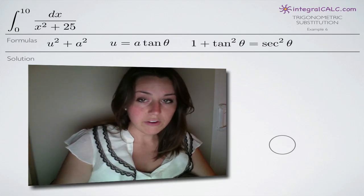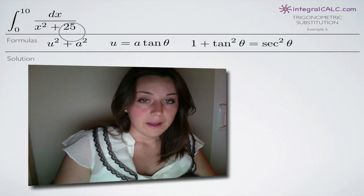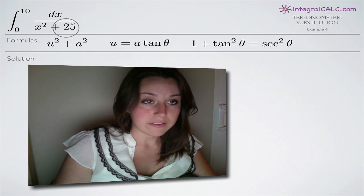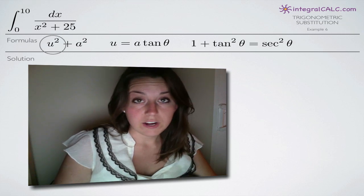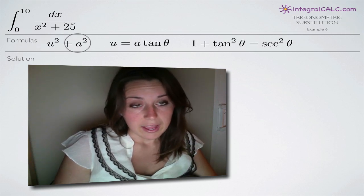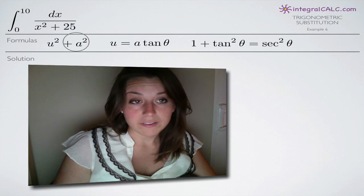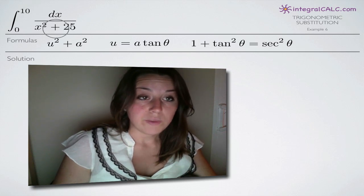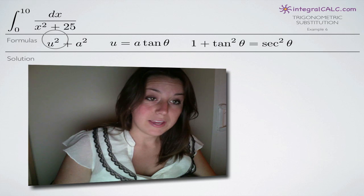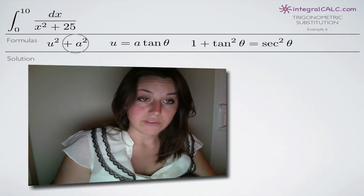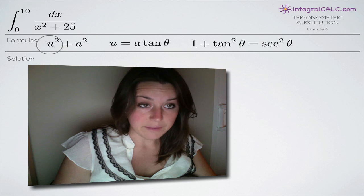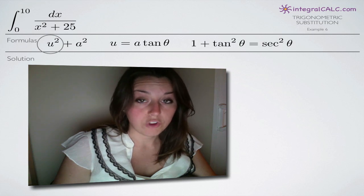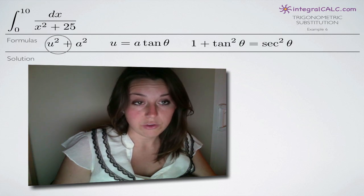Here's the formula we're going to need. For this particular problem, we need to recognize that we have the denominator in the form u squared plus a squared. U represents our variable — always x — and a represents a constant. Because we have addition here, we know we're making the substitution for u squared plus a squared, and we grab this as our identity: u squared plus a squared.